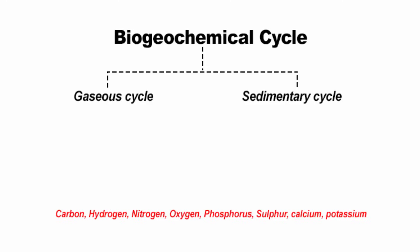For example, carbon as carbon dioxide, then hydrogen, nitrogen, oxygen are basically gases. And phosphorus, sulfur, calcium, potassium are found in sedimentary and igneous rocks. It is due to this classification that biogeochemical cycles are of two types: the gaseous and the sedimentary cycle.